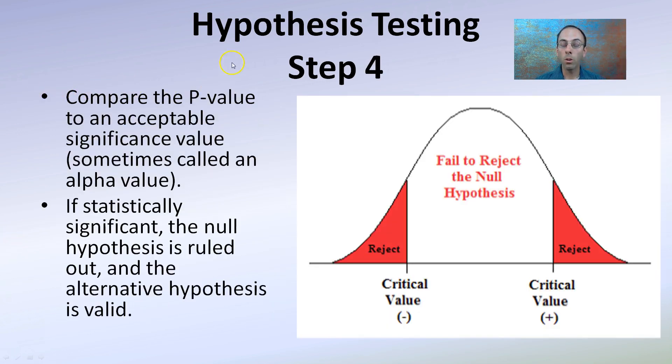Step four is when you have that p-value, you're comparing it to the acceptable significance value, sometimes called the alpha value. If it's statistically significant, the null hypothesis is ruled out, and the alternate hypothesis is determined to be valid. So going back to our example of fertilizer making plants grow better, if we fail to reject the null hypothesis, this would mean likely the fertilizer did not make any significant difference.